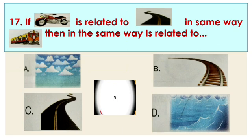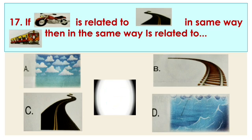Question number 17: if bike is related to road, then train is related to blank. Options are A. Sky, B. Railway tracks, C. Road, and D. Ocean or water. The answer is B, railway tracks, because a bike runs on road, and similarly a train runs on railway tracks.